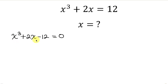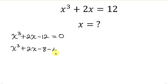This simplifies into x cubed plus 2x minus 12, which is the same as x cubed plus 2x minus 8 minus 4, equal to 0. We wrote negative 12 as negative 8 minus 4 because 8 is a perfect cube, just as x cubed is.